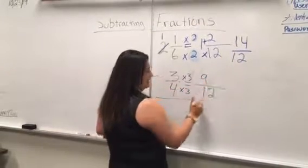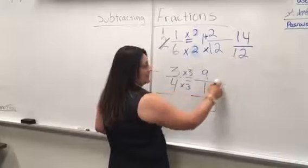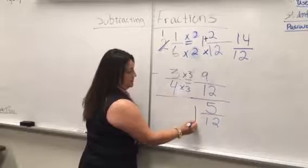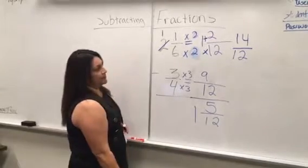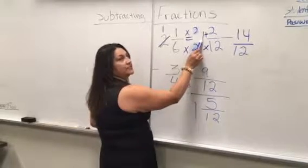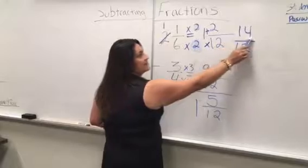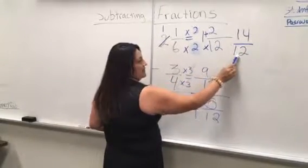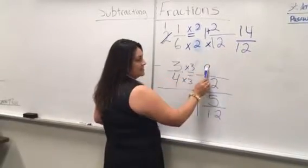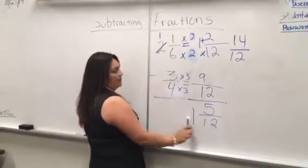Now we subtract: 14 minus 9 equals 5. The denominator stays 12. Don't forget the whole number 1 that we have left, so the final answer is 1 and 5/12.